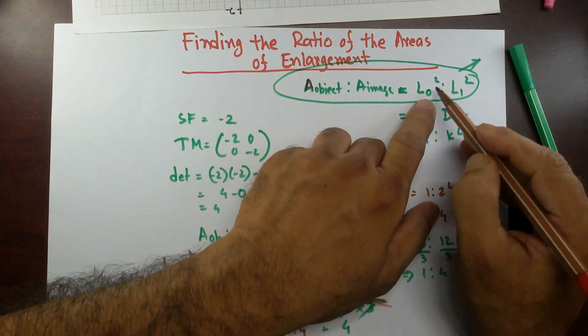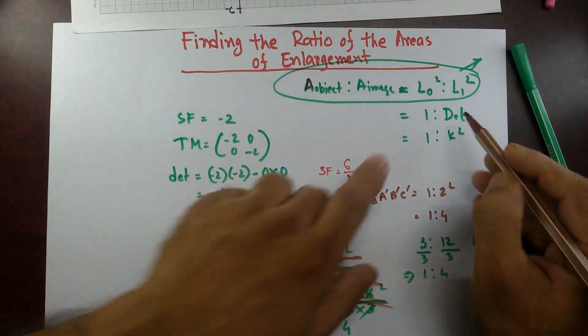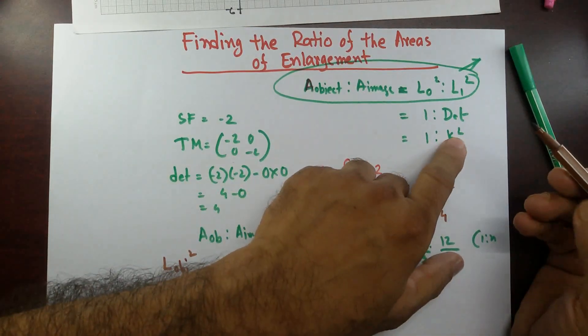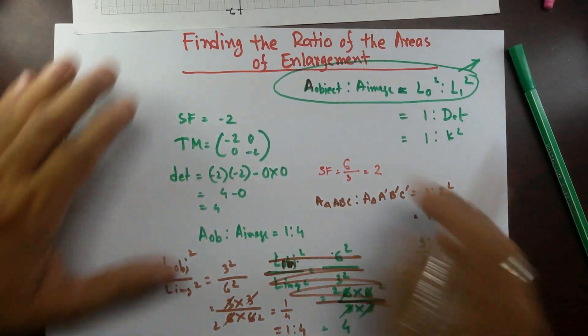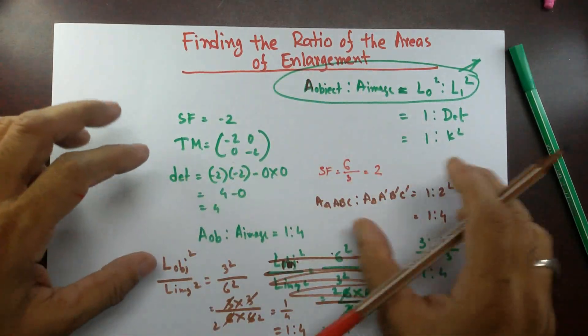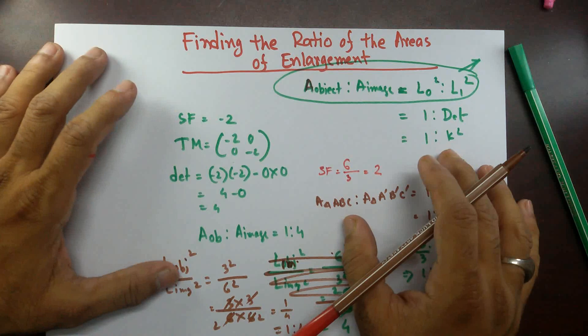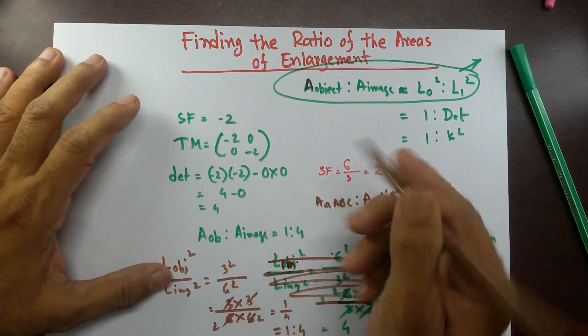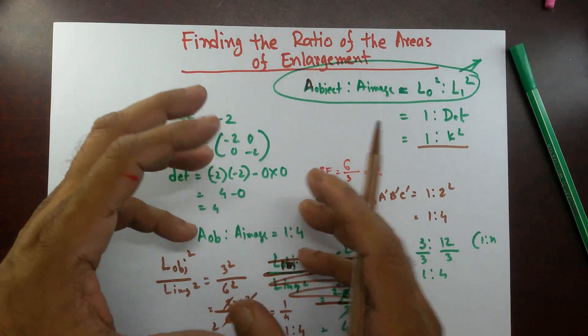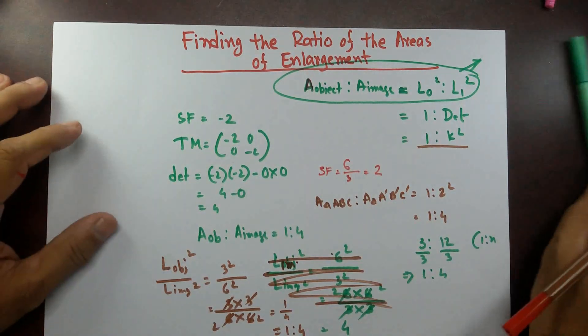So it doesn't matter how you go. If you are using the similar triangles, you can use this way. If you are using the matrix determinant, you can use this. Or if you know the scale factor, you can just square it and put this. This is how you find out areas of object and image and their ratios. And then you can go from there. If the area is given, you know the ratio. You can find out always the other area.